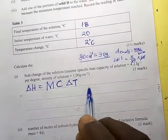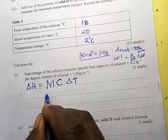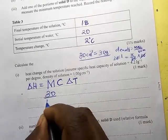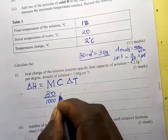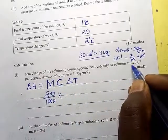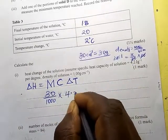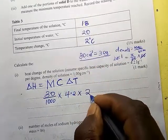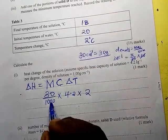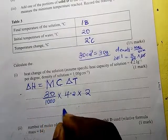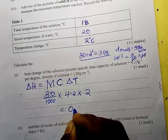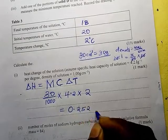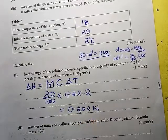So our mass is 30 grams. We convert it to kilograms by dividing by 1000, times the specific heat capacity of 4.2, times the temperature change of 2. Multiplying these together, the answer is equal to 0.252 kilojoules.